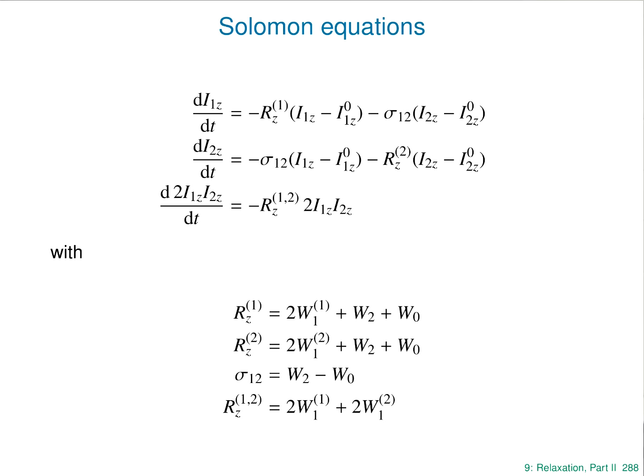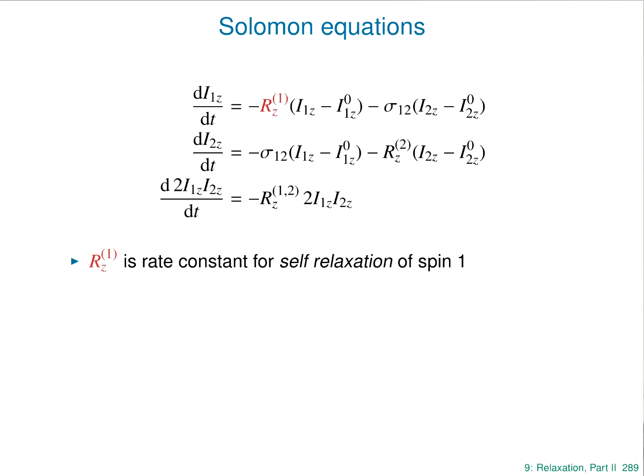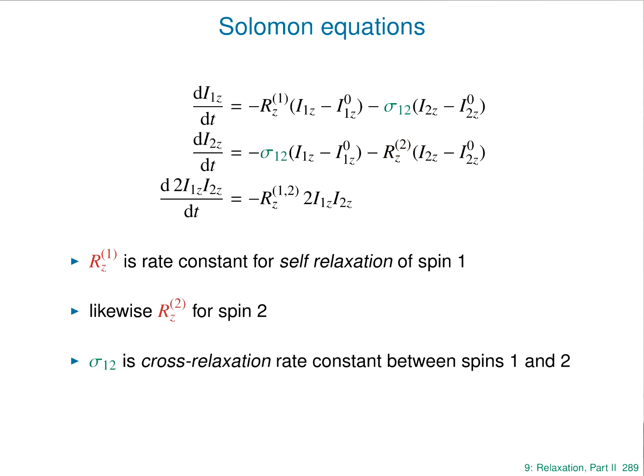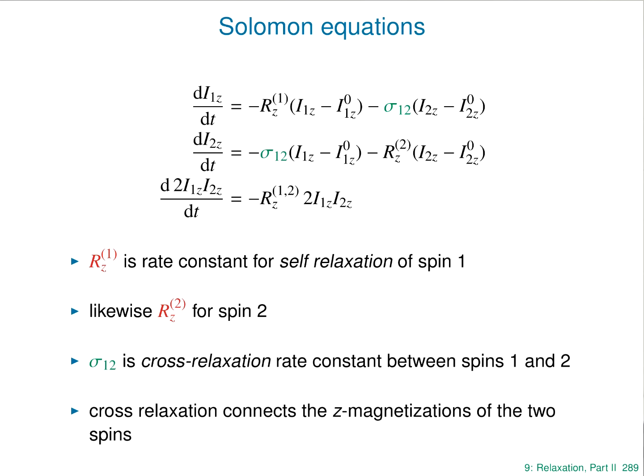The terminology we use: RZ1 and RZ2 are called the self-relaxation rate constants for spin 1 and spin 2 respectively. The term sigma-1,2 is called the cross-relaxation rate constant between the two spins — cross-relaxation in the sense that it connects the two things. This cross-relaxation process connects the magnetization from spin 2 to spin 1 and vice versa, and it turns out to be particularly important.